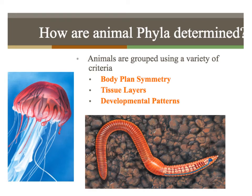Now we need to talk about how animal phyla are determined. Basically, we use three criteria: body plan symmetry, tissue layers, and developmental patterns. We're going to talk about each one of those in more detail.